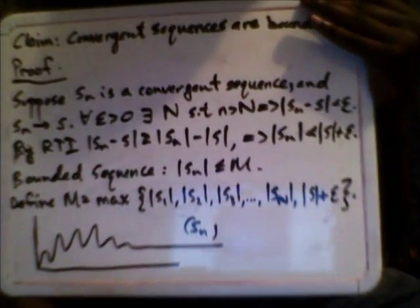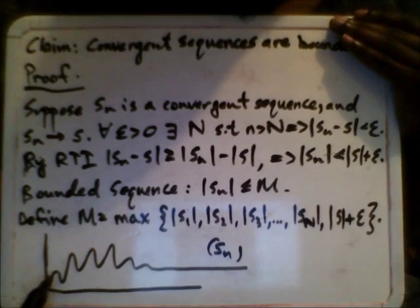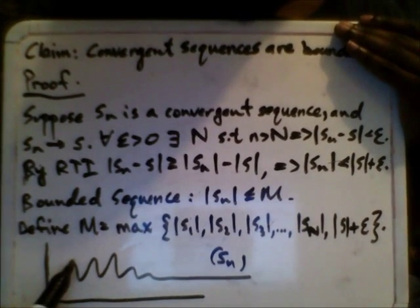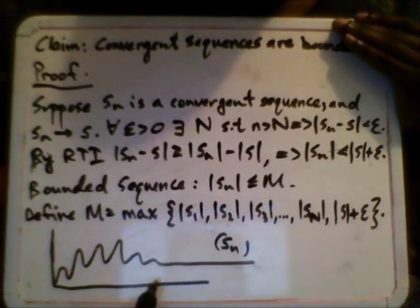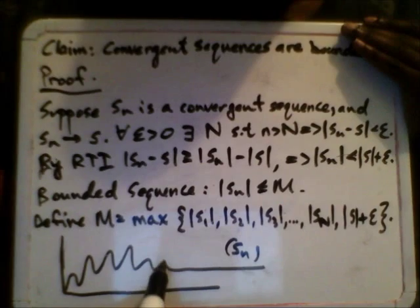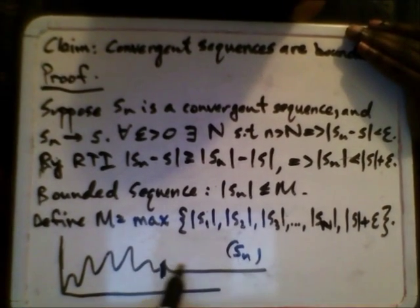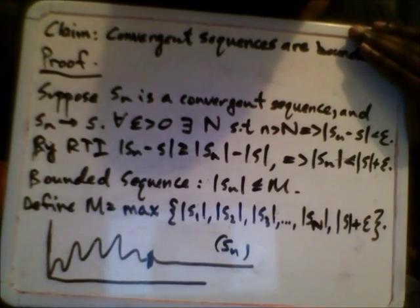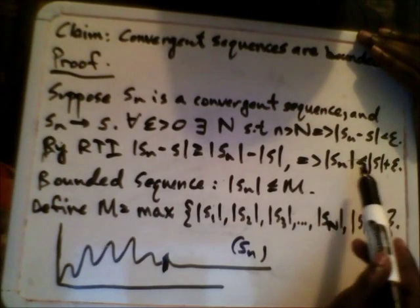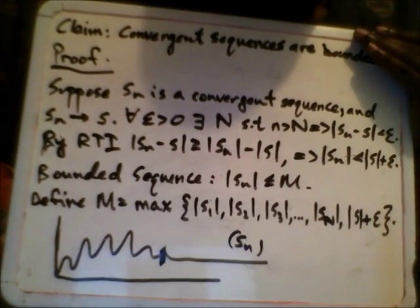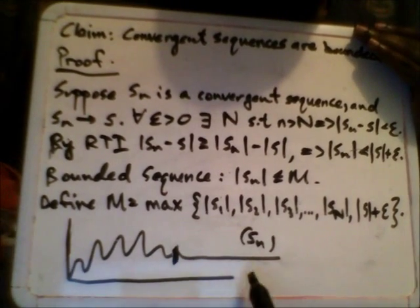Imagine this is the sequence Sₙ plotted out. This might be S₁, this bump might be S₂, then S₃, S₄, S₅, S₆, S₇, and it continues on. After a certain point it starts converging. This part where it starts converging is when you have absolute value of S plus epsilon, and that's when small n is greater than big N.